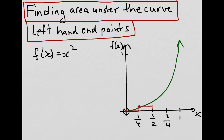Continuing with one half, our left-hand endpoint would be right there. Draw a horizontal line over to the adjacent sub-interval and form a rectangle. And continuing at three quarters, the left-hand endpoint would be here; horizontal line over to the adjacent sub-interval and form a rectangle. And thus our approximation of the area under the curve would represent the addition of all the areas of these rectangles.